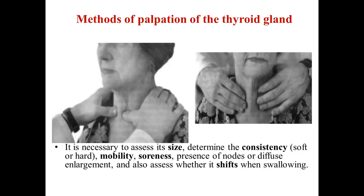There are two methods of palpation: you can stand behind the patient or you can be in front of the patient. During palpation it is necessary to assess the size of the gland, determine the consistency — it may be soft, elastic, or hard — detect the mobility, soreness or painfulness of the gland, presence of nodes or diffuse enlargement, and also assess whether there is a shift when swallowing.